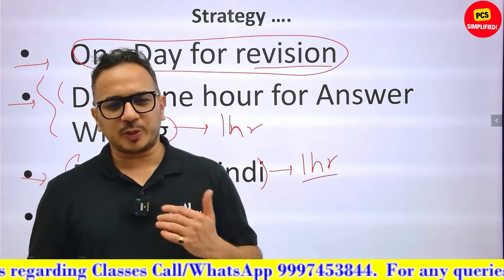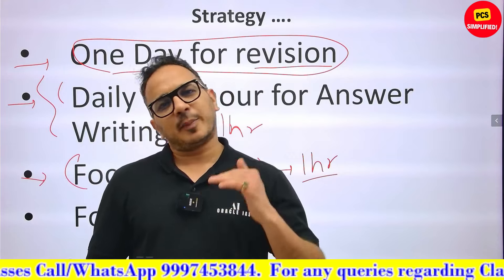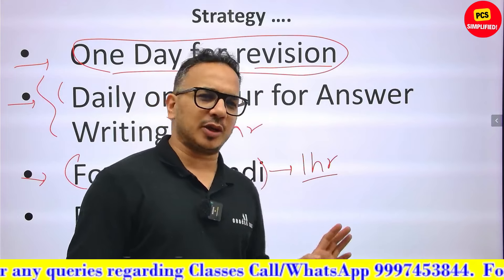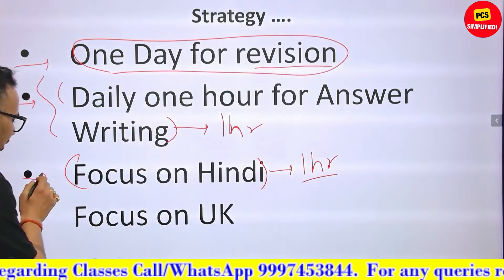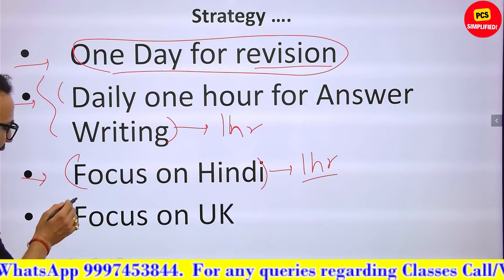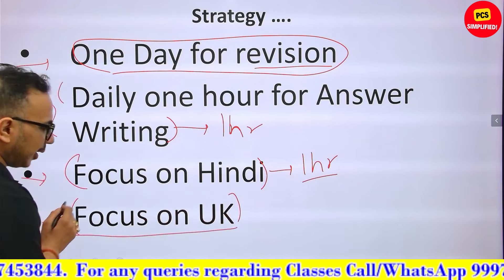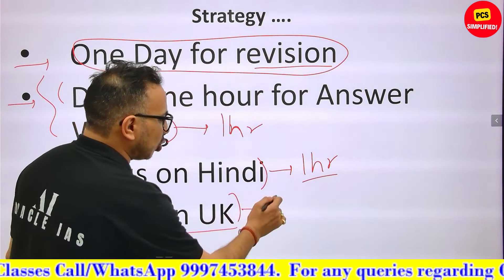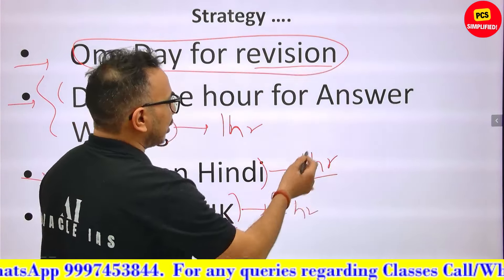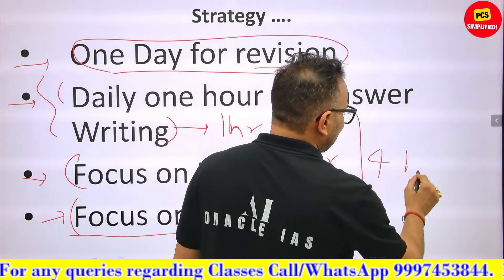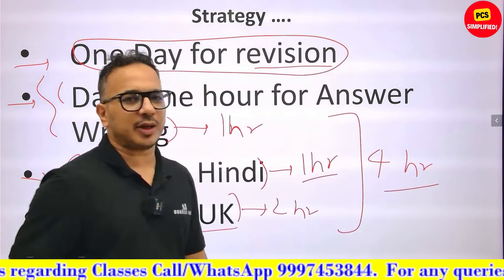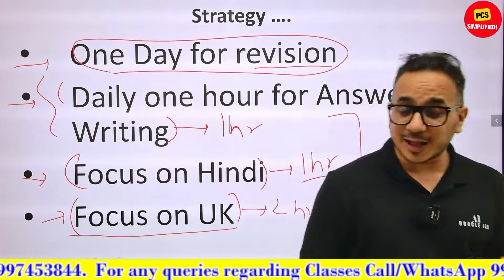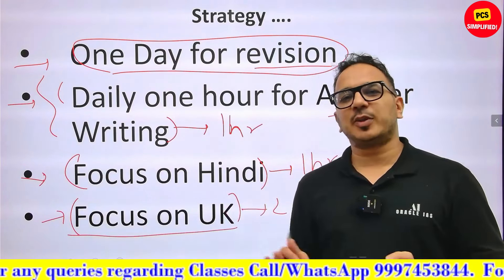Last but not least: focus on Uttarakhand Special Papers. That's approximately 27% of the syllabus. Dedicate at least 2 hours daily to UK special. So you already have 4 hours: 1 for answer writing, 1 for Hindi, 2 for UK special. Add 6 to 8 more hours for the rest of the syllabus — history, geography, polity, economics, ethics, etc. That justifies 12 hours a day. Don't be scared. Once you sit at your desk and start, things become simpler.